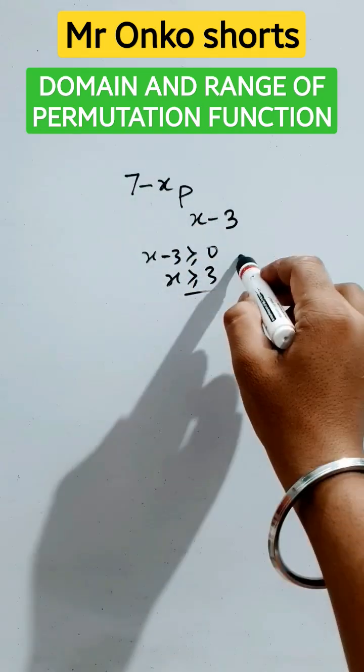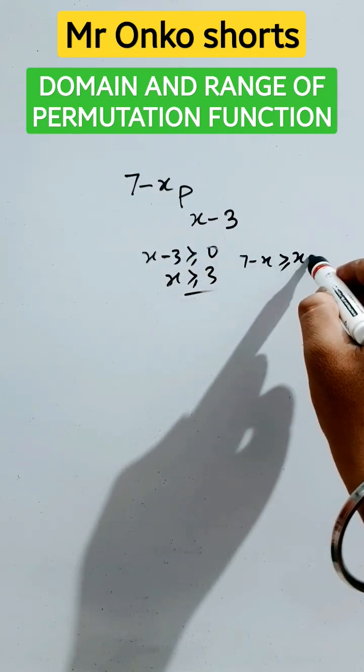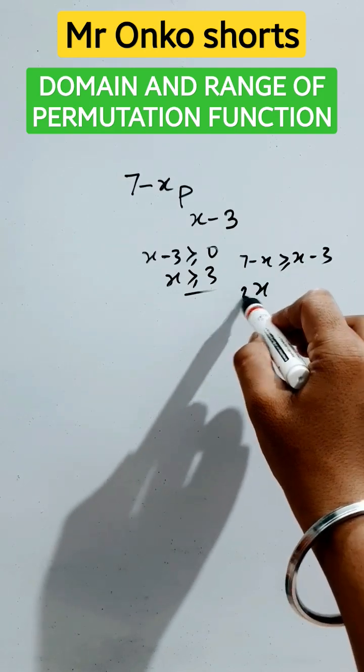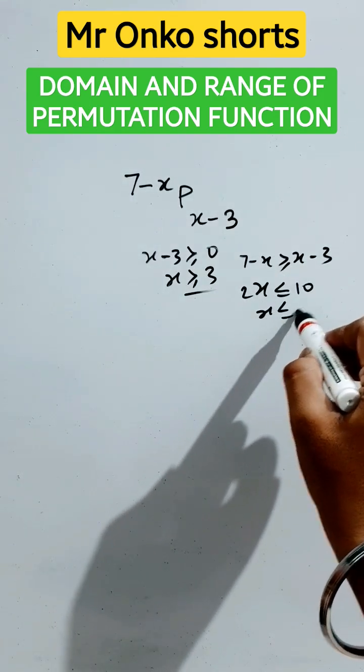This must be greater than or equal to this. So twice of x is less than or equal to 10. So x is less than or equal to five.